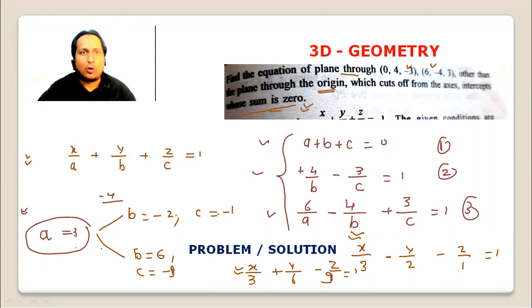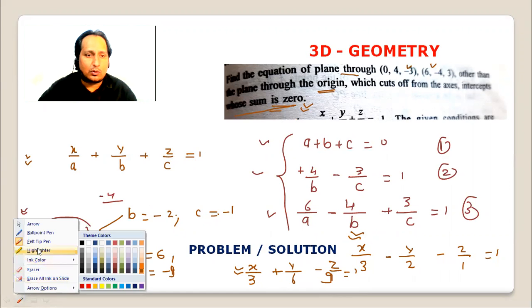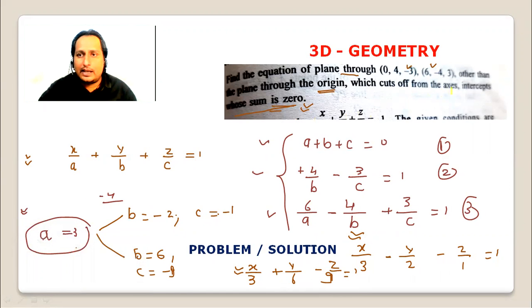If I analyze this problem, the key is that I have the information that intercept sum is zero, so I assumed the plane equation in intercept form, which was beneficial. The other information is that two points are passed. Then three equations can be solved simultaneously. If we solve these three equations simultaneously, we get a, b, c values, and in fact two planes are possible.